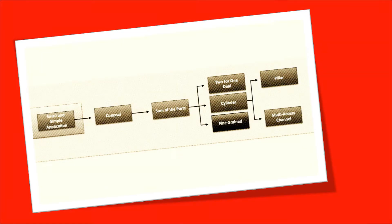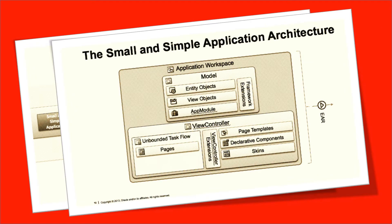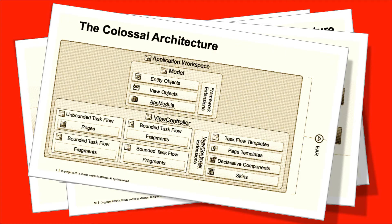In previous episodes of the ADF Architecture Pattern set, first of all we looked at the small and simple application architectural pattern. One of the main qualities of this particular pattern is everything is contained in one workspace. However, in the colossal pattern, where everything is also contained in one workspace, we introduced the concept of the Bounded Taskflow, or BTF. In JDeveloper 11G, Bounded Taskflows are a key architectural piece — they give us an incredible amount of power, both technically and from a requirements perspective.